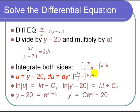So now, to integrate this left-hand side, we have y minus 20 on the bottom. Let that be u. And its derivative of y minus 20 is just 1. So we can say du is dy. So that gives us the integral of du over u equals the integral of k dt.